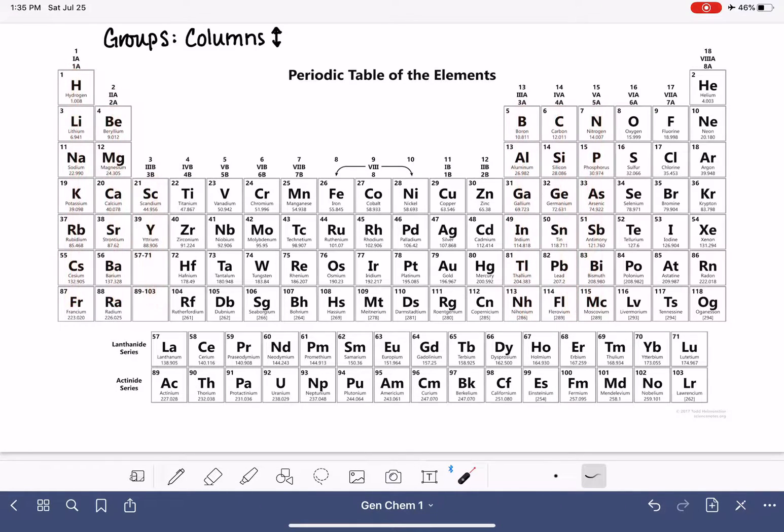The groups are identified by a number or by a number letter combination, and that's listed up at the very top of each group. Now, you'll notice that there are three different titles for each one of these groups. That is because we're currently in the process of switching from one way of numbering our groups to a new way of numbering our groups. So, for example, let's focus on this group right here.